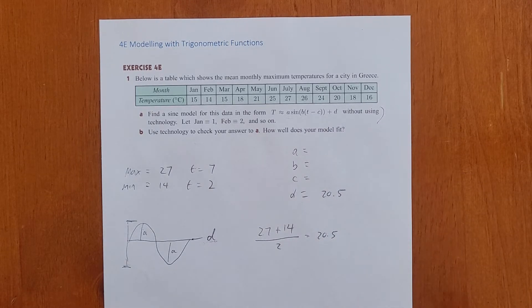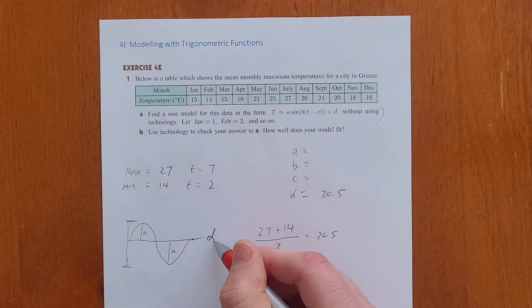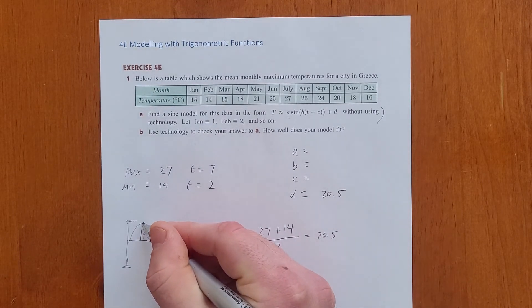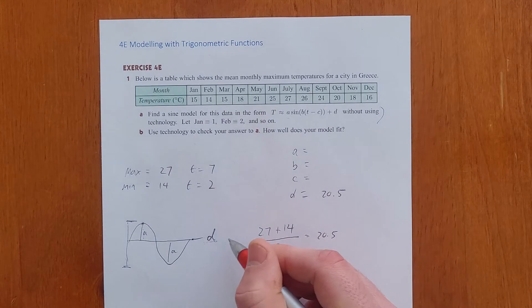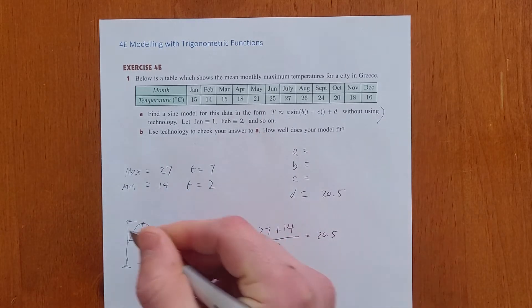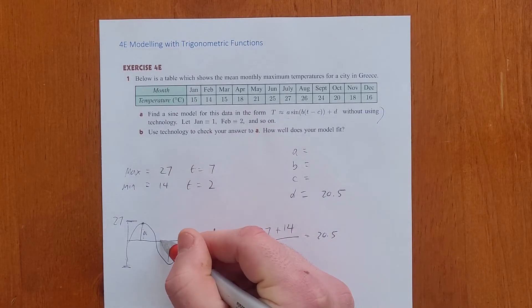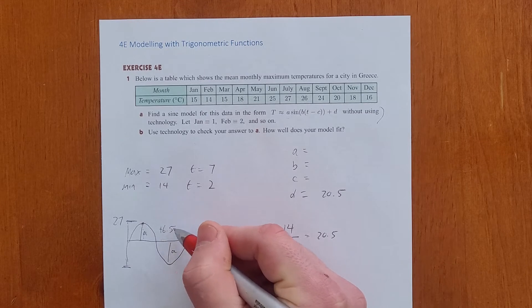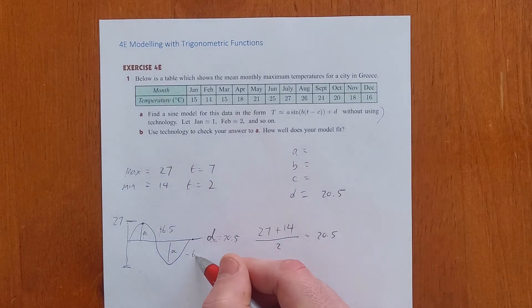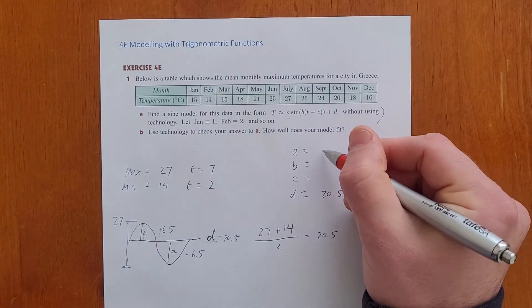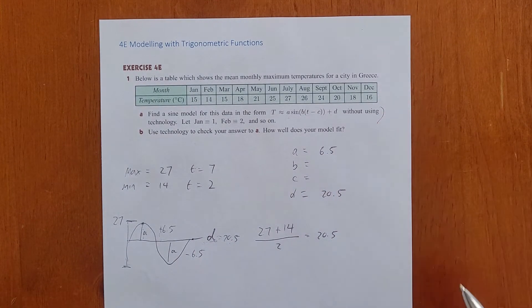And then the amplitude is how far is it from the principal axes, which is 20.5, to the peak or to the trough? And so what we can see is from here it's 20.5, and we go up to 27. That's going up 6.5. And then from 20.5 down to 14, that's going down 6.5. And so our amplitude, our value of A, is 6.5.